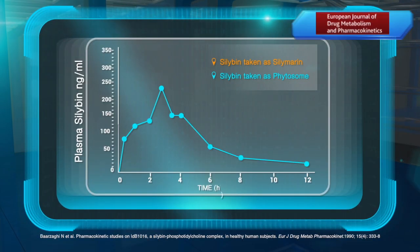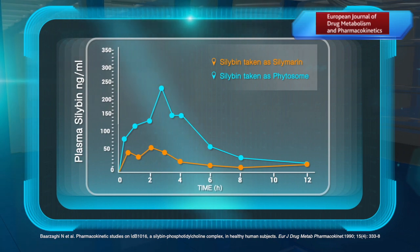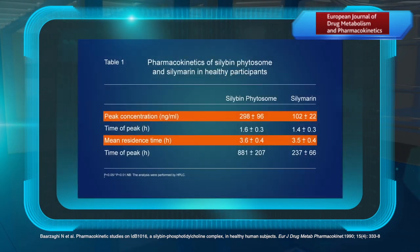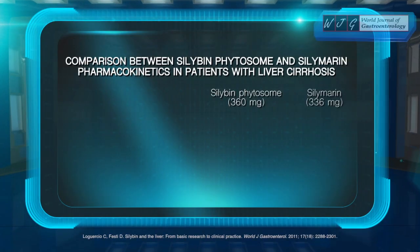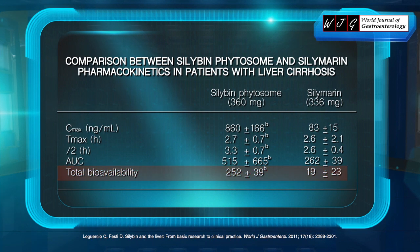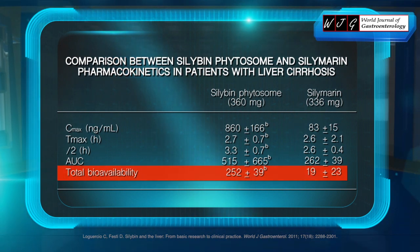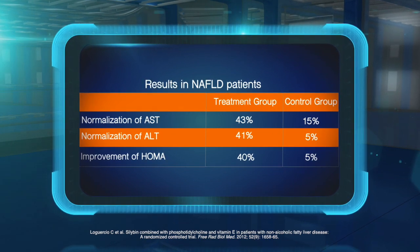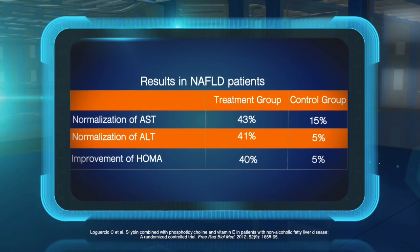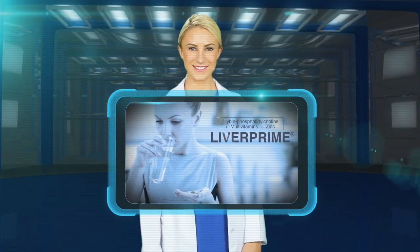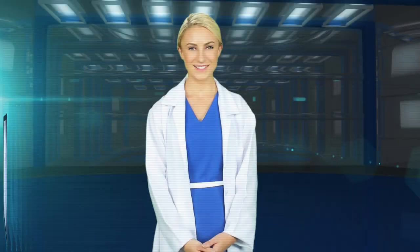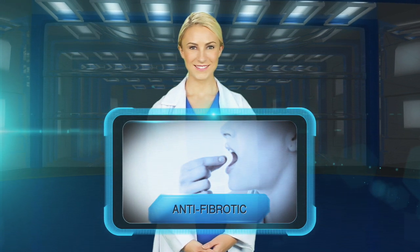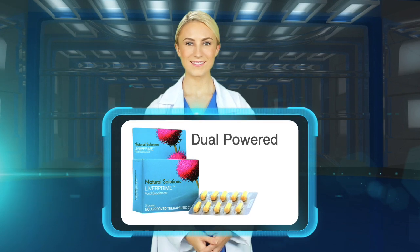Several clinical studies have shown vast improvements in the absorption of silibin in siliphos compared to silibin or silimarin alone. In fact, these studies show that siliphos is about three times better absorbed than silimarin alone. Moreover, the total bioavailability in cirrhotic patients is ten times more with silibin plus PC than silimarin alone. Siliphos is not just better absorbed, but it has also been shown to have clinical benefits such as normalizing ALT and AST levels, as well as improving insulin sensitivity scores. Liverprime's increased absorption makes it the most bioavailable form of oral silimarin available, ensuring that patients get the triple benefits of silibin: antioxidant, antifibrotic, and anti-inflammatory. Liver Prime — dual-powered, triple benefits.